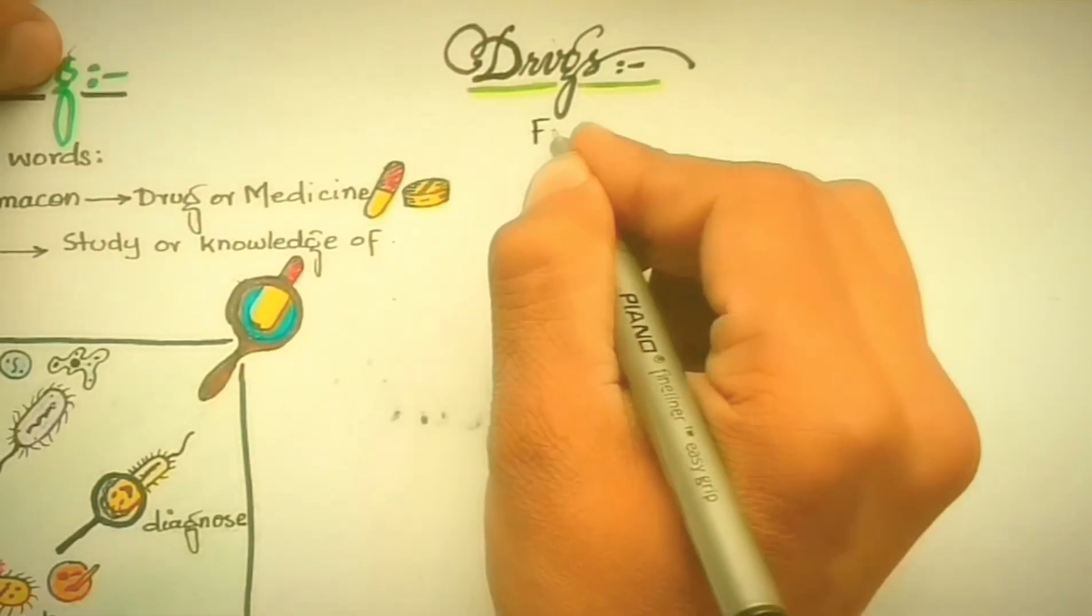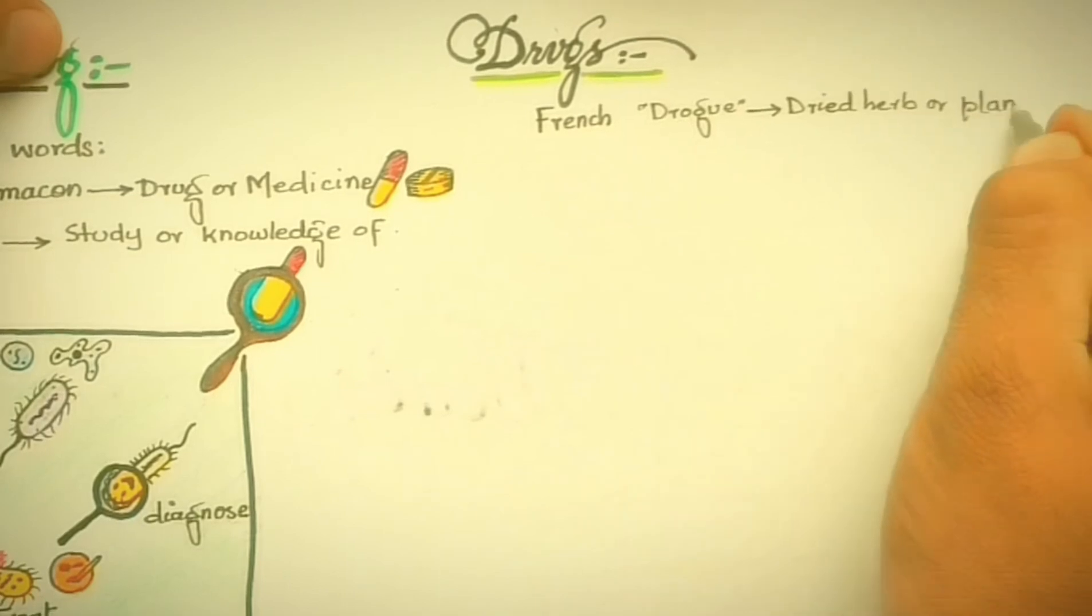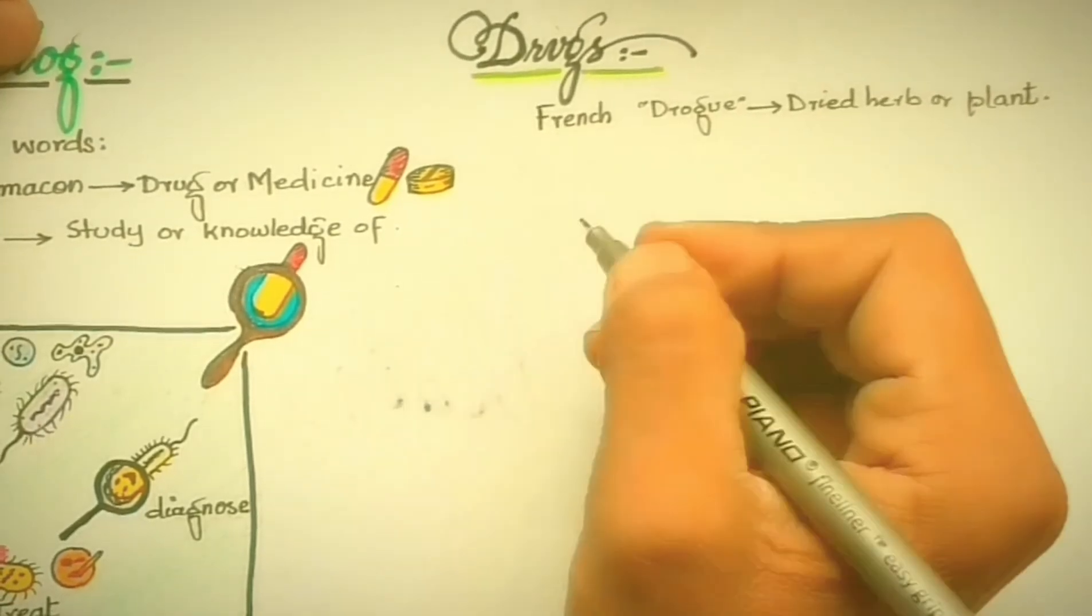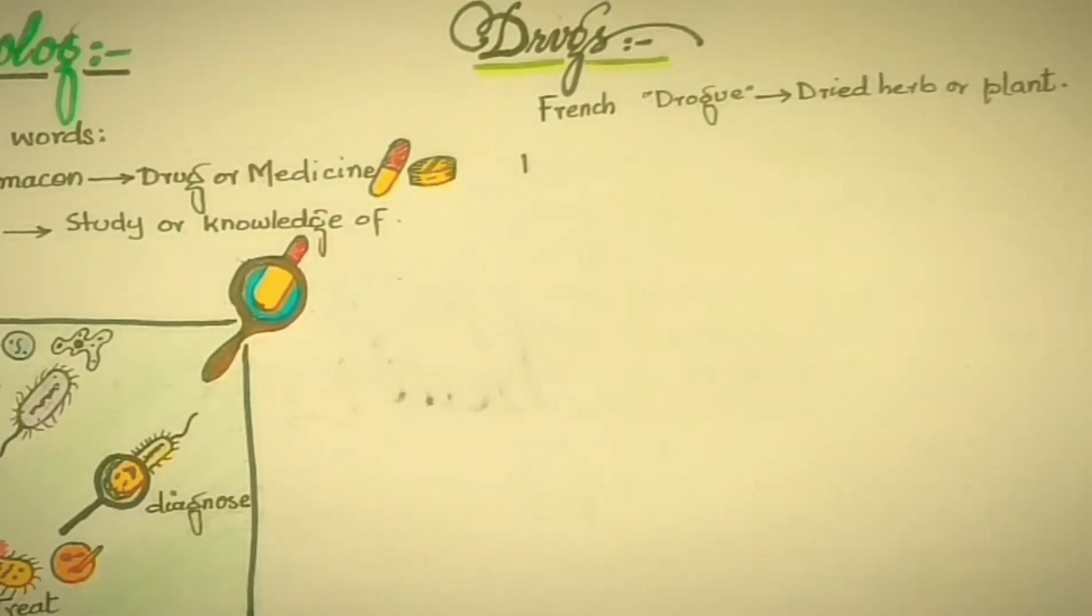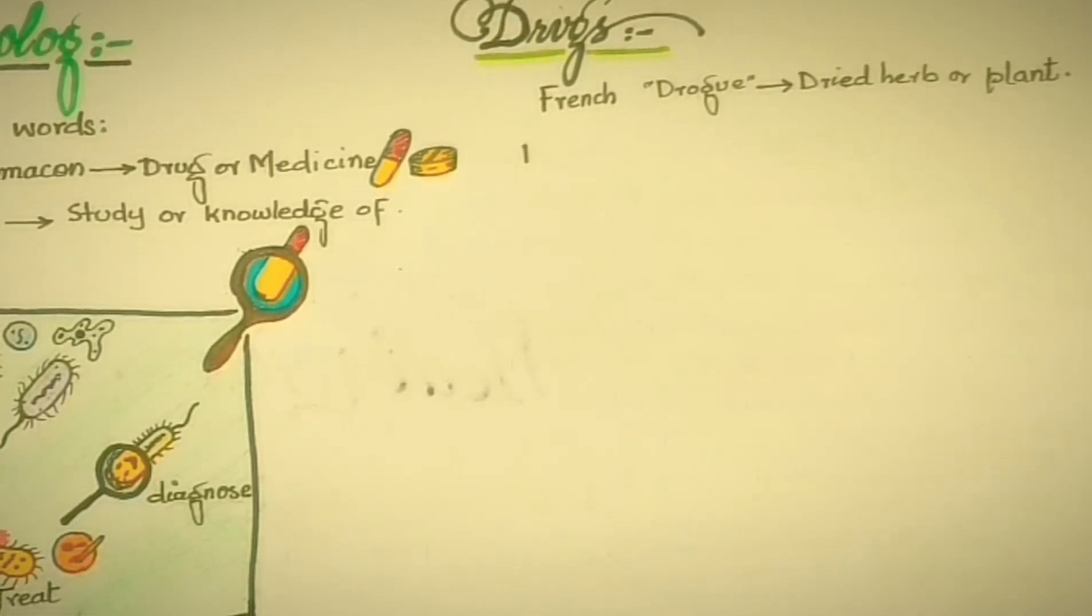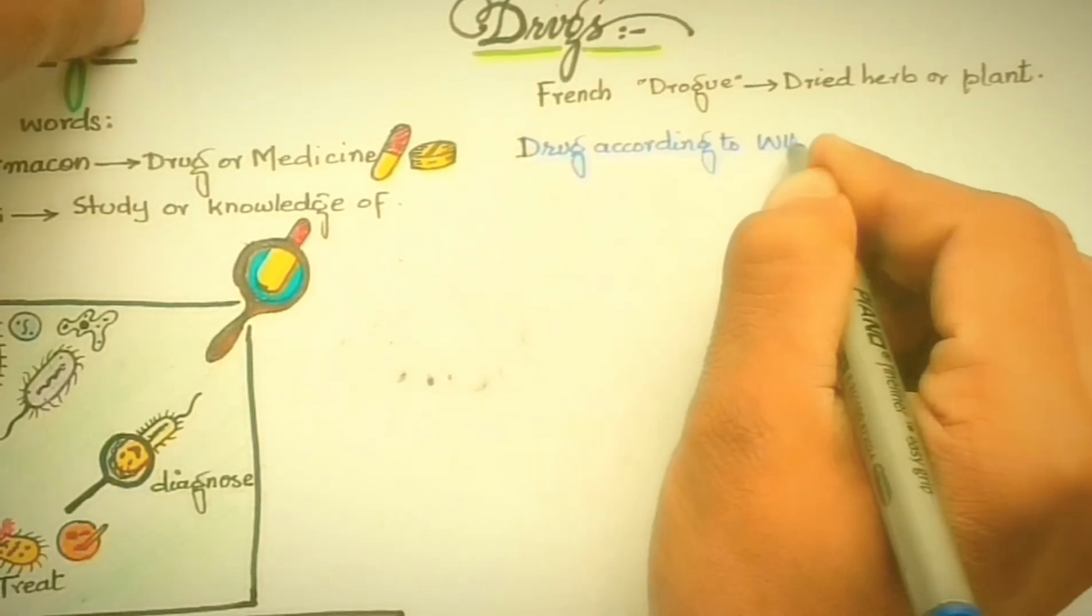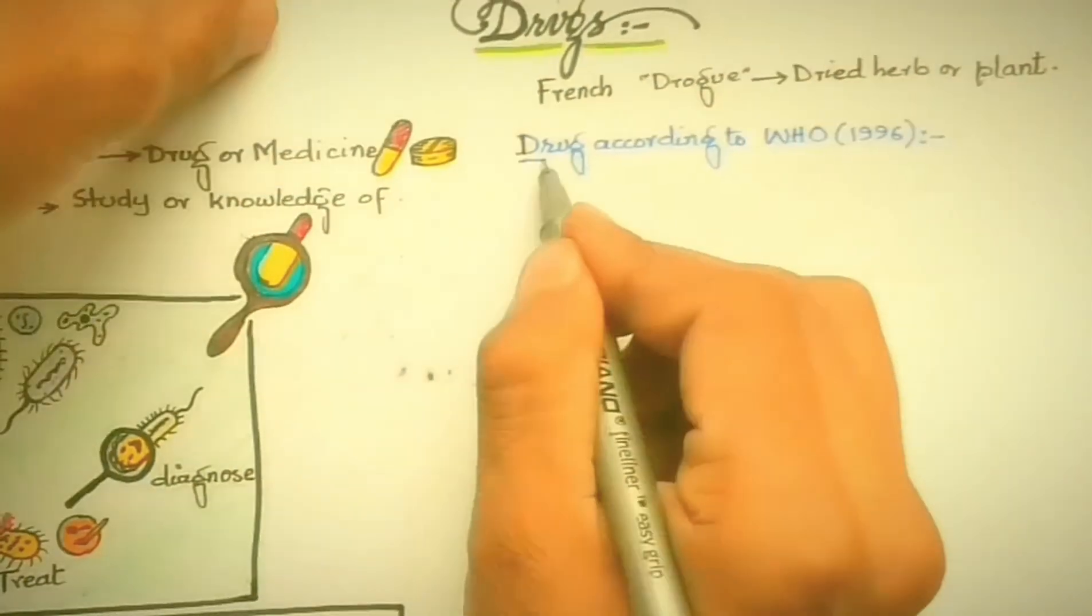The second part of the lecture is drugs. What is a drug? The word drug is derived from the French word 'drogue,' which means dried herb or plant. The first definition of pharmacology does not cover contraceptives and drugs which modify normal body functioning.